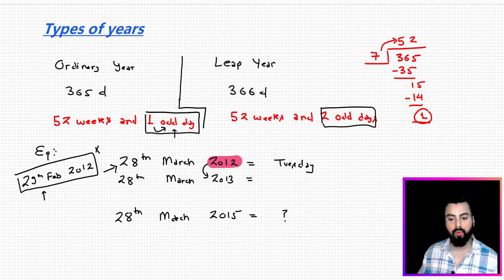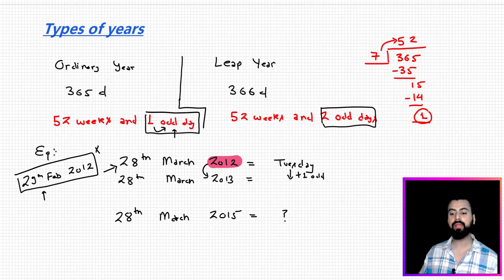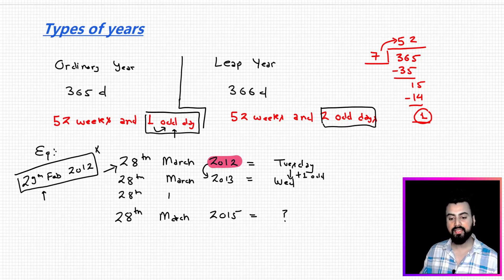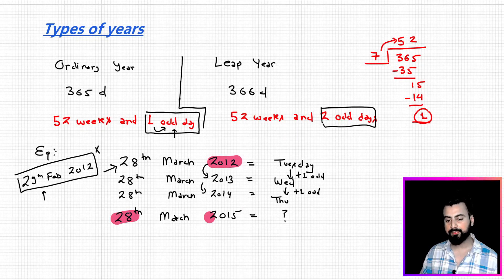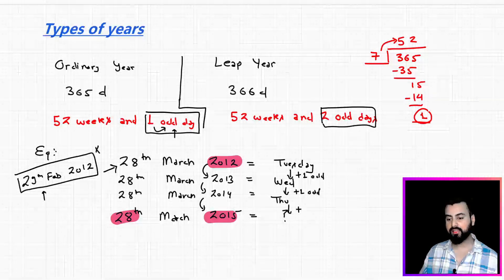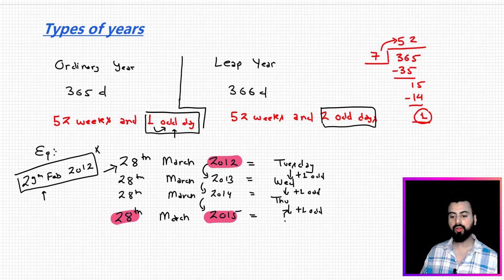In an ordinary year the number of odd days is only one, so you add one odd day, which means going ahead by one day — the day is Wednesday. Likewise, from 2013 to 2014, add one odd day and you get Thursday. Going one more year forward, again an ordinary year, add one odd day and the answer is Friday.